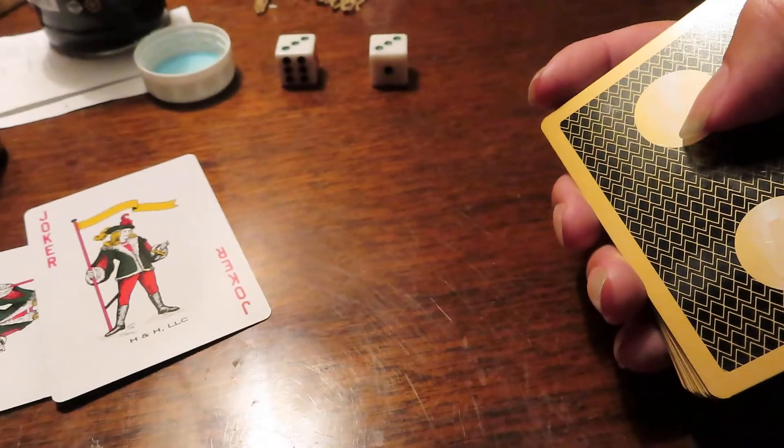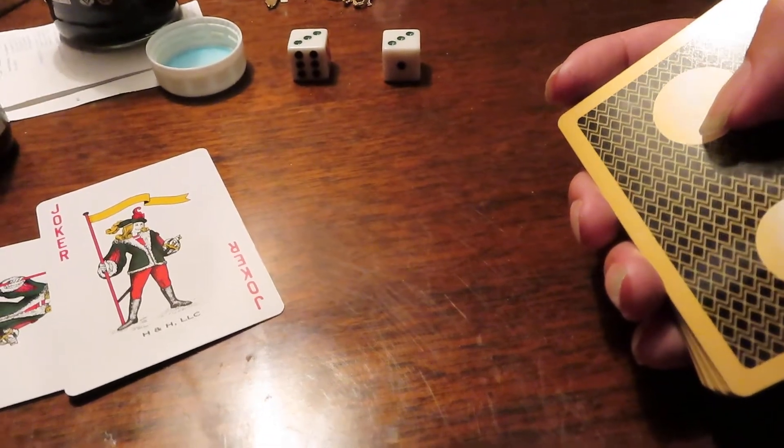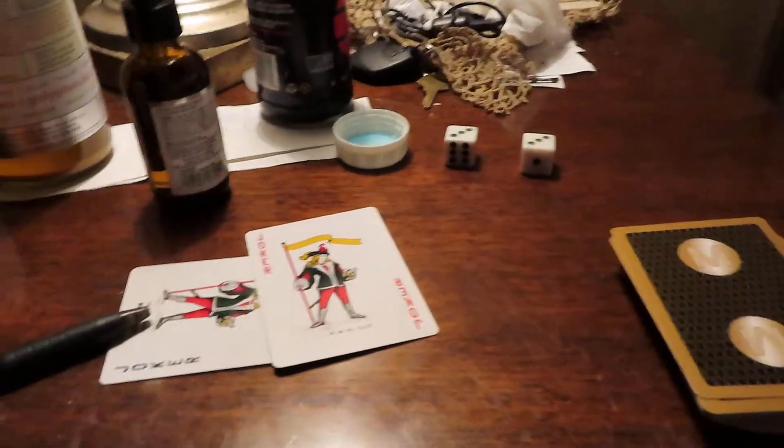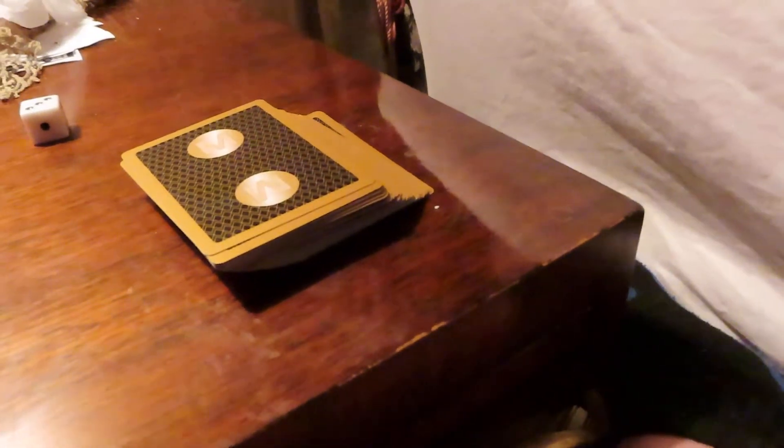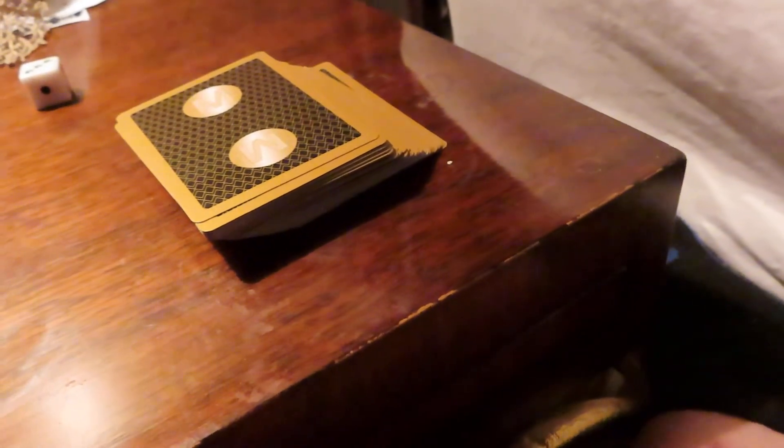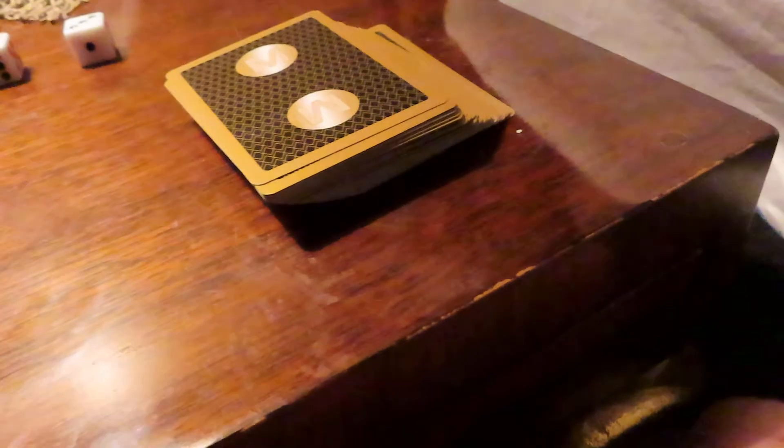We had learned in math class that if you add the fractions, let me see if I can get a pen to write this down to show you guys. We had learned that if you added the fraction 1 plus a half plus a third plus a quarter that it diverges, right?